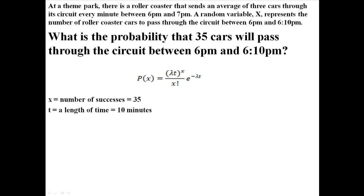T is the length of time. In this case, we're talking about 10 minutes, the time between 6 p.m. and 6:10 p.m. Lambda is the average number of successes in an interval of t equals 1. So, in a one-minute interval, the average number of successes is 3, because we expect 3 cars to pass through every minute.